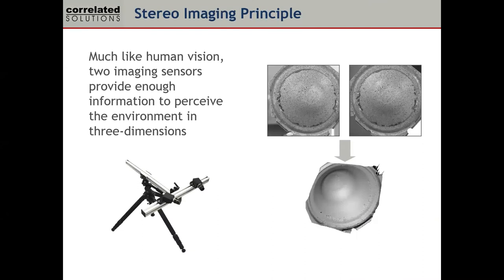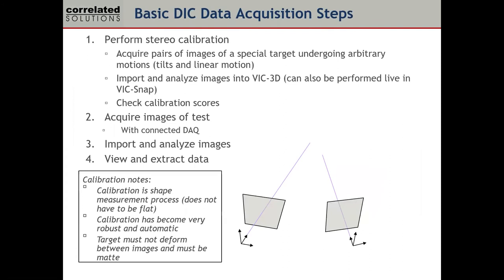Many people ask why we use two cameras rather than three or four. The answer is that two cameras is sufficient to image one surface area and correlate between cameras to measure shape and deformation — adding a third camera has no meaningful benefit. Before we can correlate, we need to know the stereo rig geometry: where the cameras are relative to each other and their distances, so we can triangulate shape and get real metric data. This requires the calibration procedure.